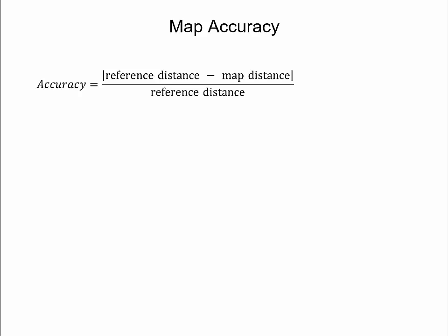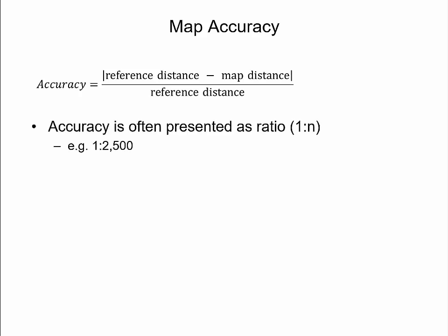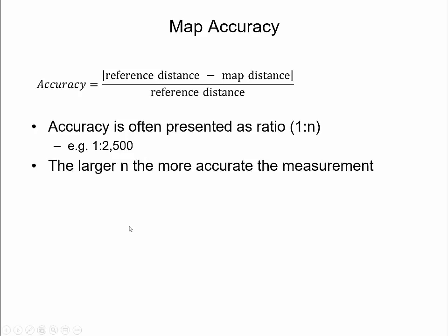Map accuracy can be found by comparing the length of a line on the reference globe with the length of that line measured on the map. The equation takes the absolute difference between the reference distance on the Earth model, such as the ellipsoid, and the measured map distance. The accuracy is expressed as this difference over the reference distance, resulting in a decimal number typically converted to a ratio with one in the denominator, such as 1 over 2500. The larger the denominator and the smaller the ratio, the higher the map accuracy and the smaller the distortion.